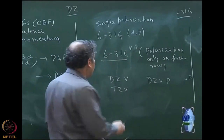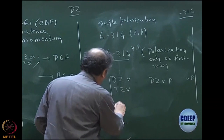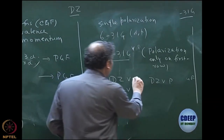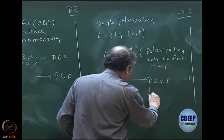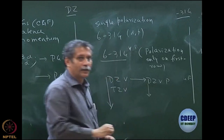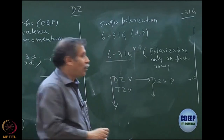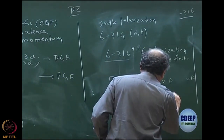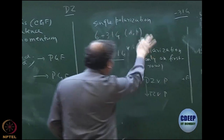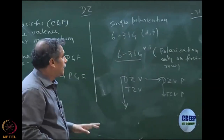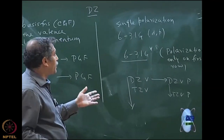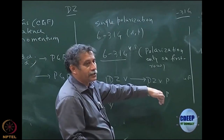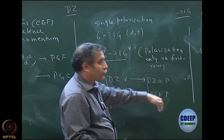Many feel that instead of just augmenting the valence, you should first add polarization, then augment the valence. So TZVP will be very good. The progression is: go from DZV to DZVP, then come to TZVP. And then you can have quadruple-zeta valence.